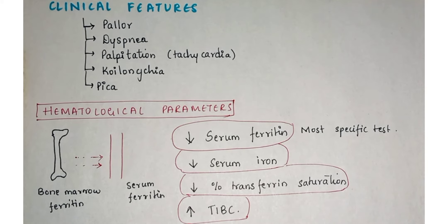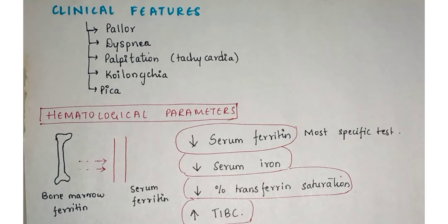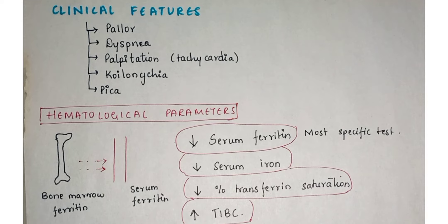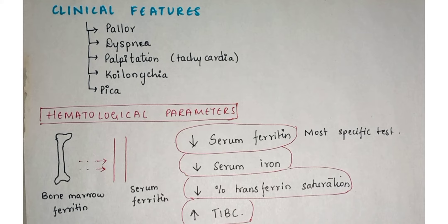Clinical features include pallor because the skin looks pale, dyspnea due to breathlessness as the patient is not getting enough oxygen, and palpitation due to tachycardia because the heart has to beat faster to compensate. Koilonychia — spoon-shaped nails — is a systemic feature of iron deficiency anemia. Pica is also seen in children.